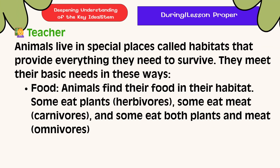Plants and animals have special places called habitats that provide everything they need to survive. They meet their basic needs in this way. Food: Animals find their food in their habitat. Some eat plants — herbivores; some eat meat — carnivores; and some eat both plants and meat — omnivores.